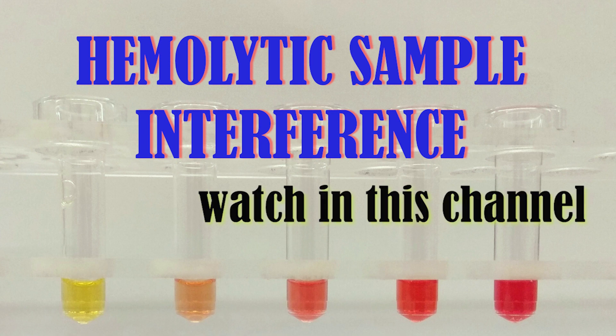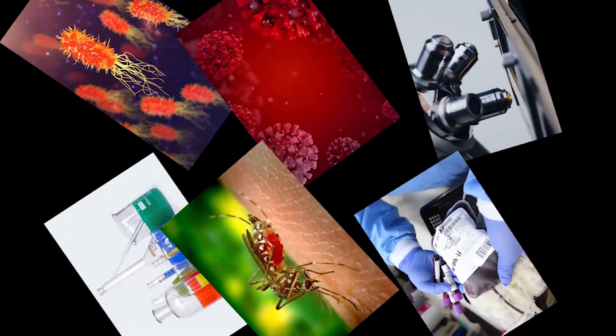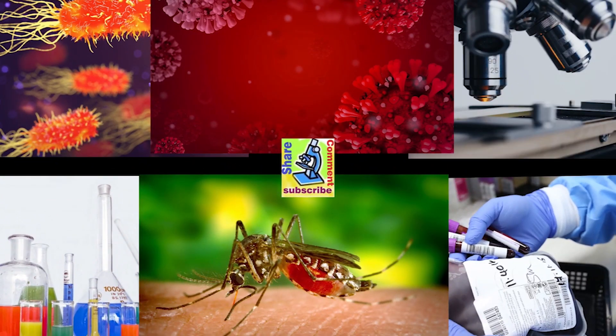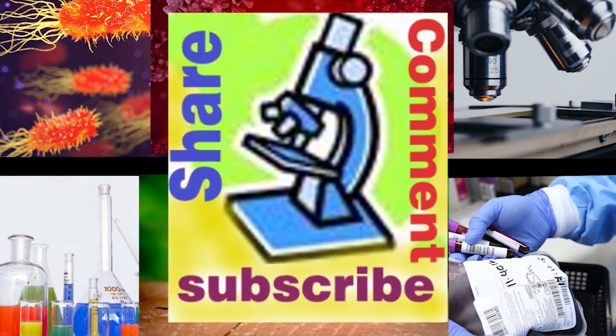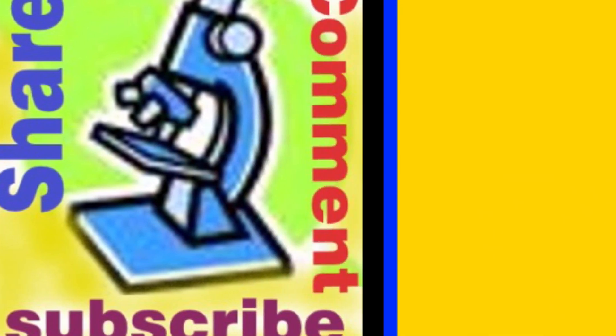For centrifugation, the sample can be centrifuged at 1300 to 4000 RPM for 3 to 15 minutes. Recommendations are mostly set to a longer centrifugation time at lower speed to assure sample quality. Thanks for watching — please subscribe, share, and like.